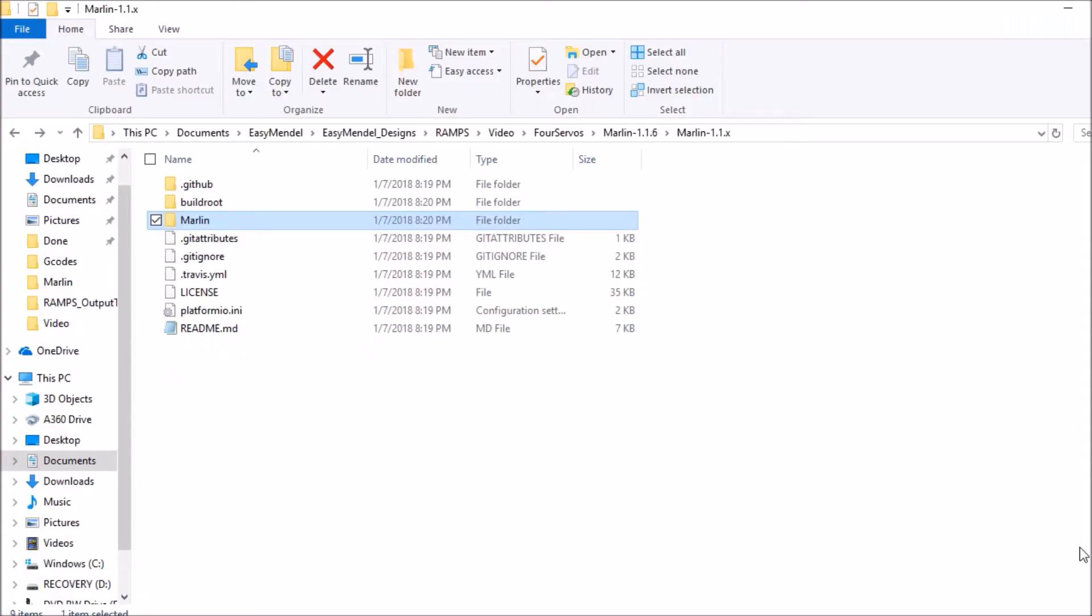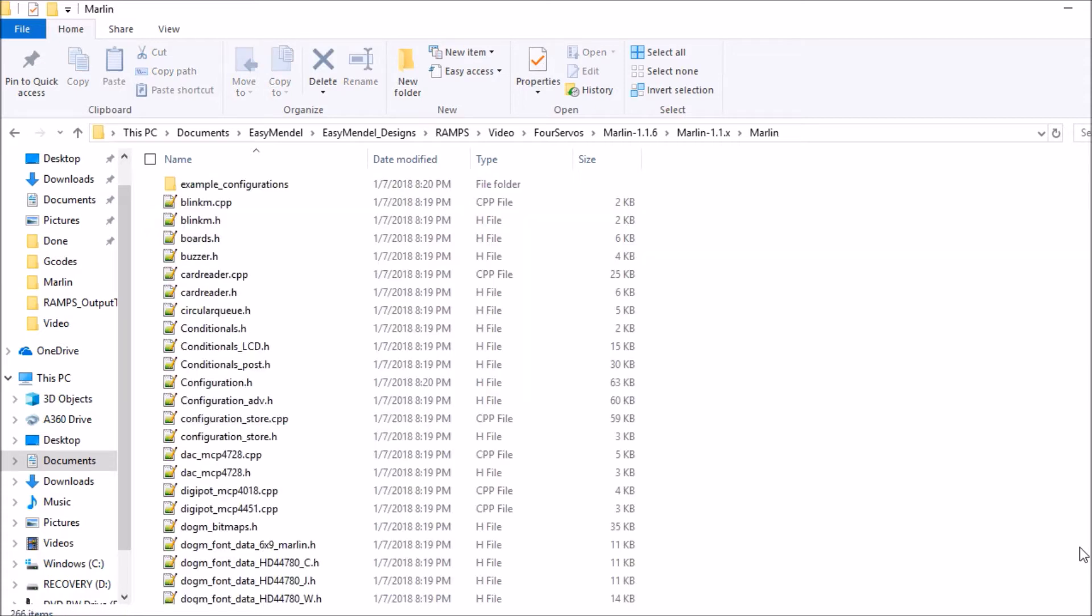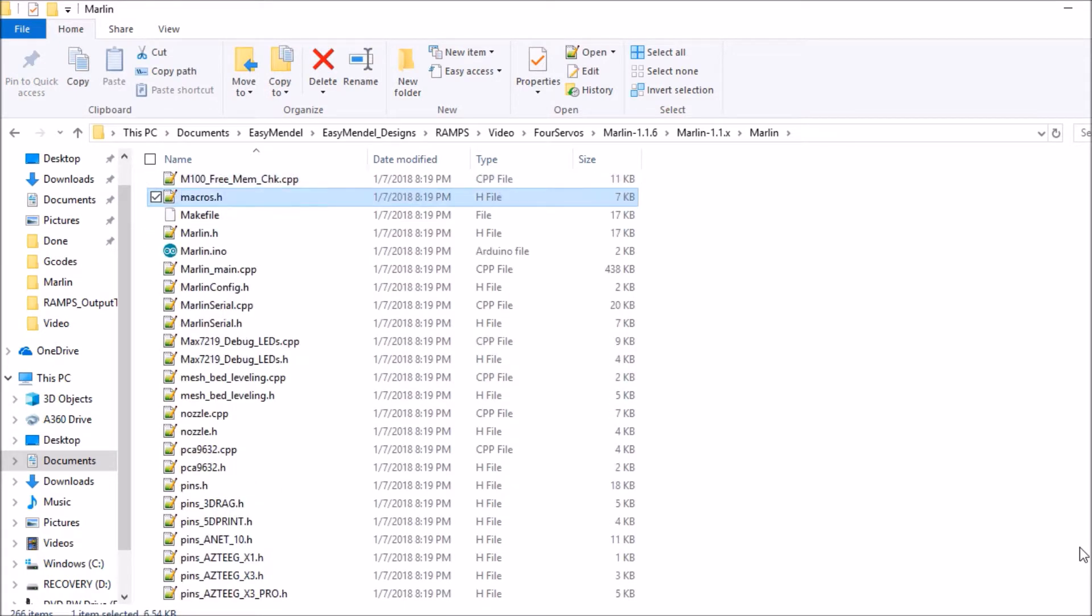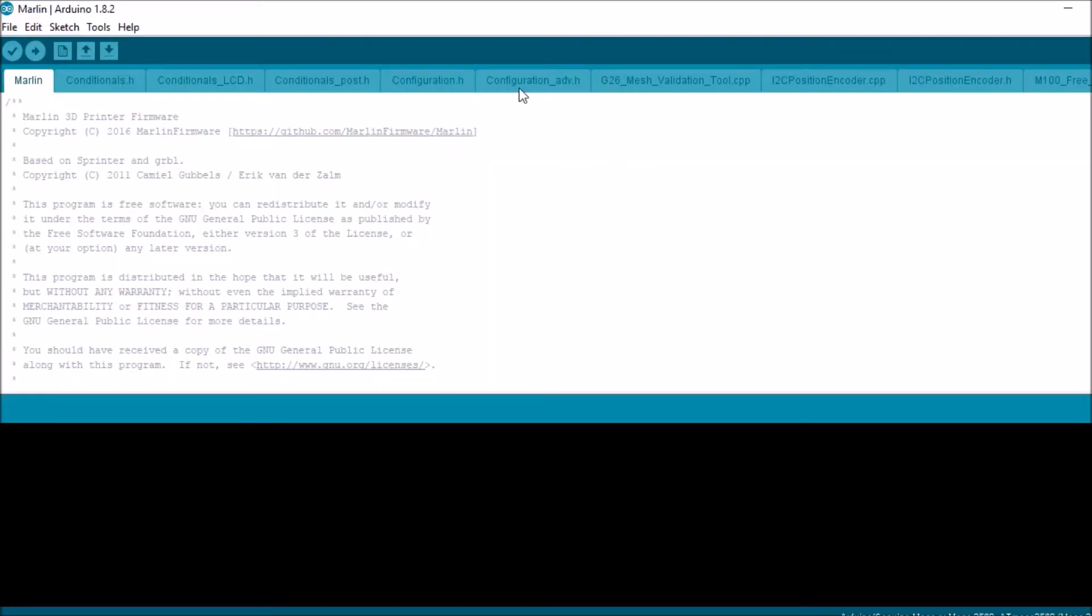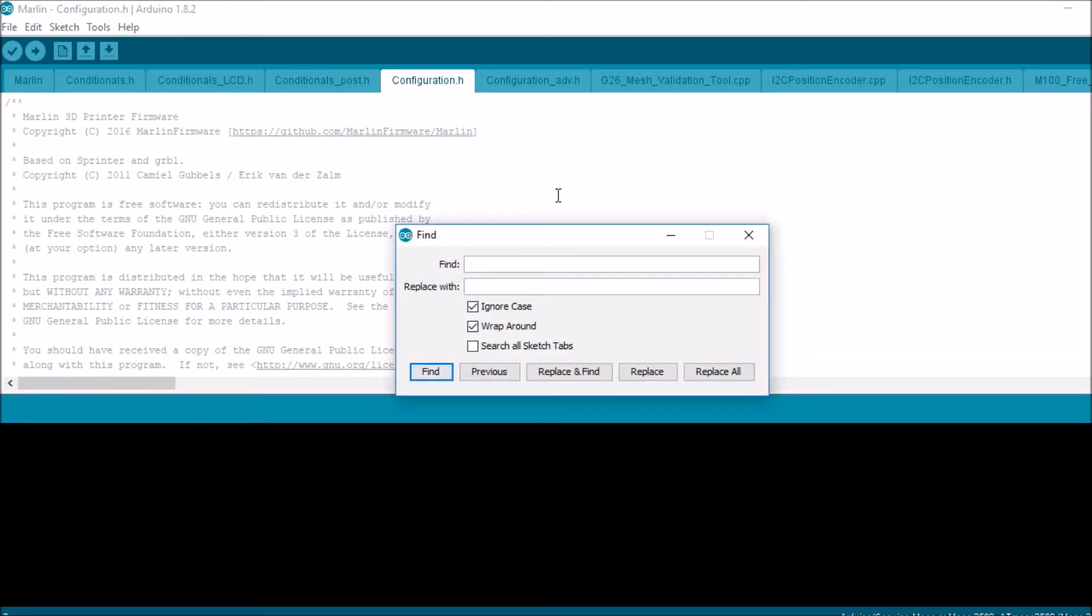Okay, we're in the Marlin firmware folder. We're going to open up Marlin, go to the Marlin.ino file, and open that up. We're going to select the configuration.h tab, then search on motherboard.